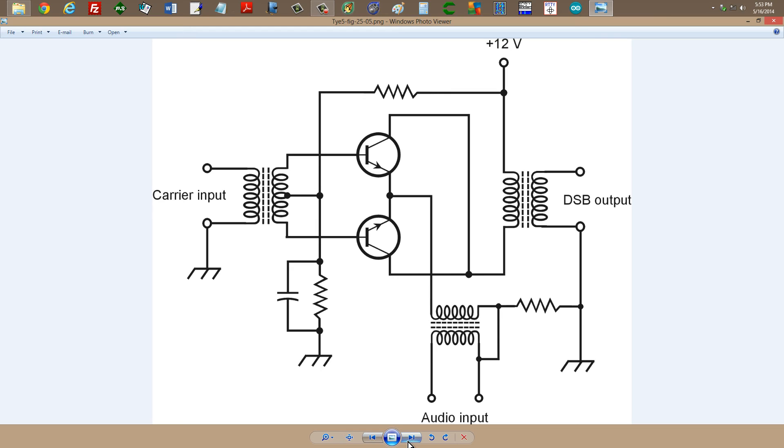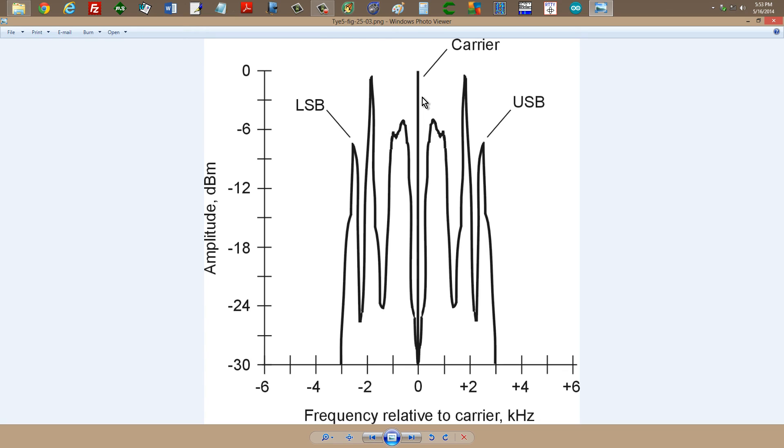I've shown you this circuit in another video, a balanced modulator circuit. That is how you get a double sideband suppressed carrier signal that looks just like this minus the carrier.